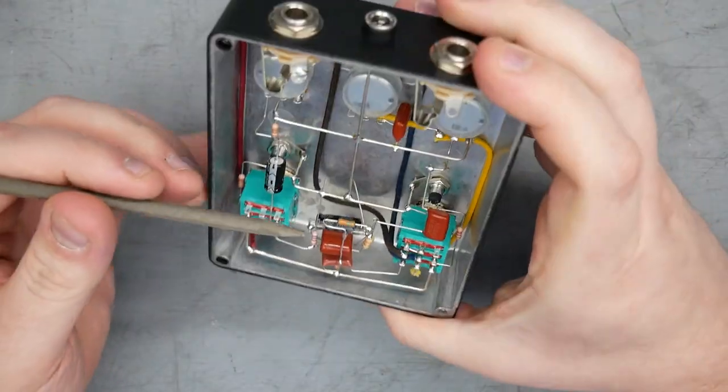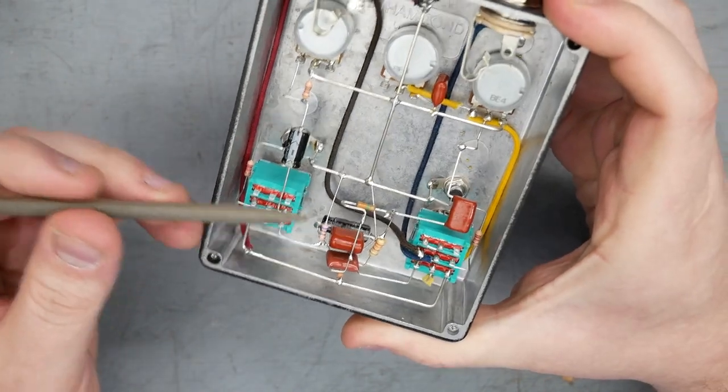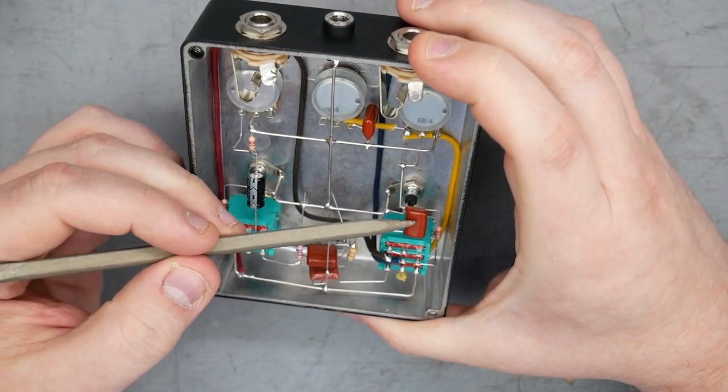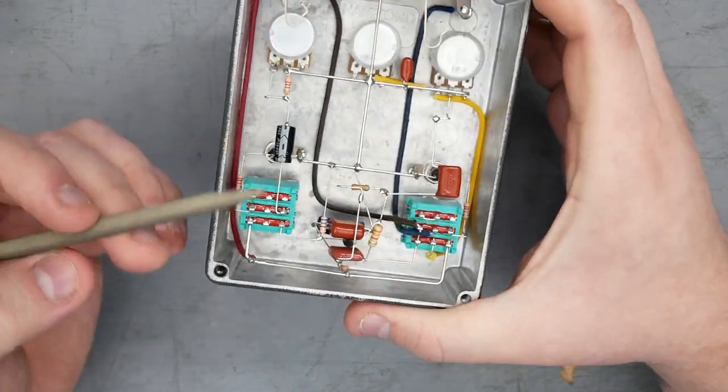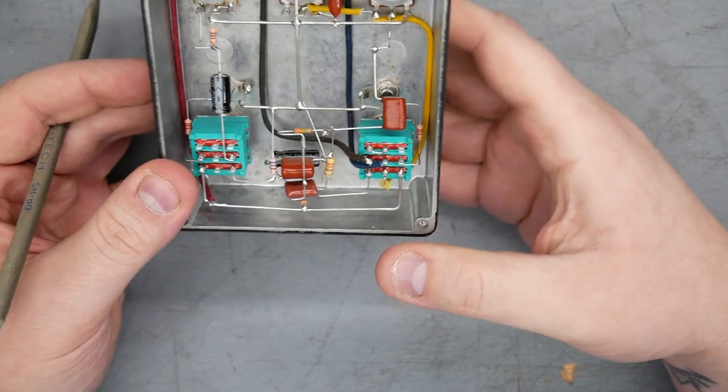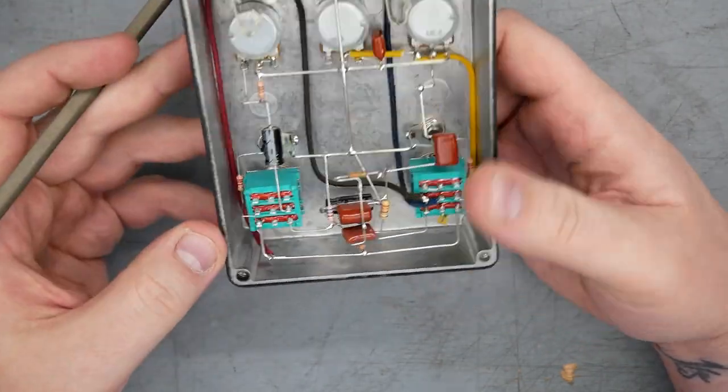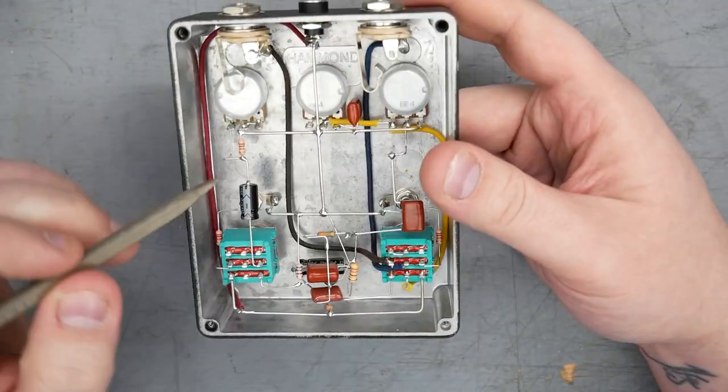As far as component choices, we have a mix of carbon film resistors as well as appears to be metal film resistors. I believe these pink ones are metal film. The capacitors are these maroon capacitors. I don't know if these are actually Panasonic, but that's what they look like is the bigger Panasonic style maroon capacitors. The wiring is the cloth pushback wiring. The jacks are switchcraft style. The enclosure is Hammond like we thought. The pots are alpha.